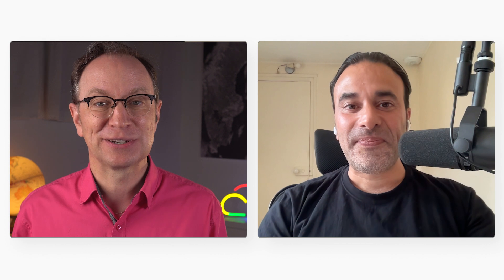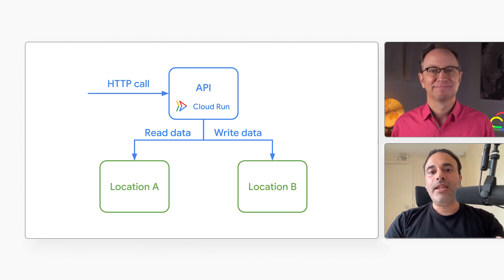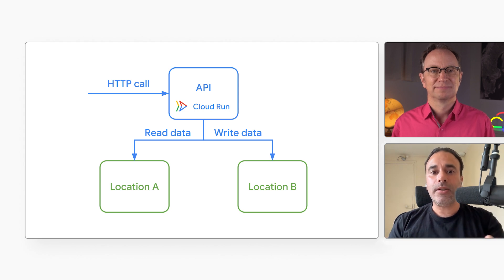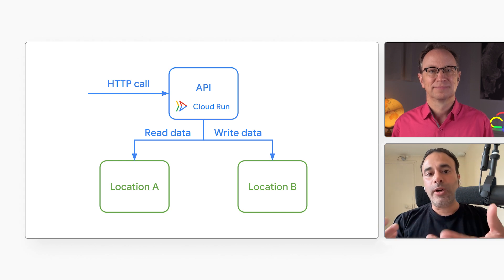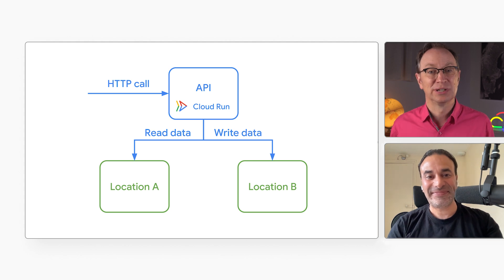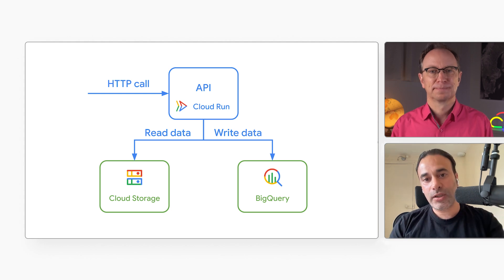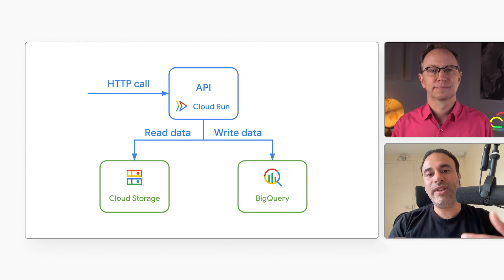Now tell me about the real world Cloud Run service you mentioned at the beginning of this episode. In my job, I have built many APIs in Cloud Run. These APIs are called by other services and they move and process data. I couldn't bring any code I wrote for a real client, so I wrote a football-related service that is similar. It reads football statistics from a file in Cloud Storage, applies business rules, and writes the results to a BigQuery table.